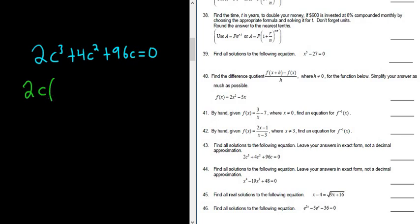And then the question becomes, what do we multiply by 2c in order to get 2c cubed? So c squared and plus, and then what do we multiply by 2c in order to get 4c squared? So I guess 2c.